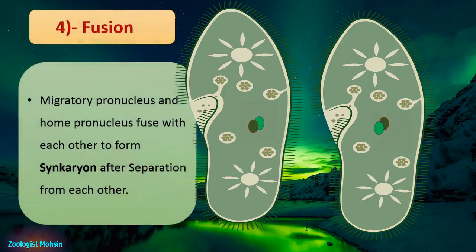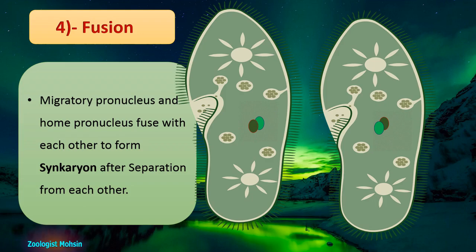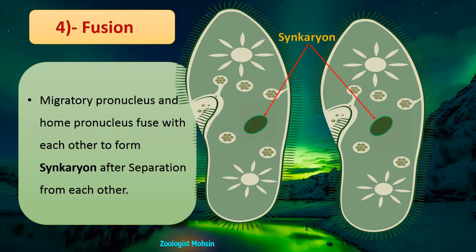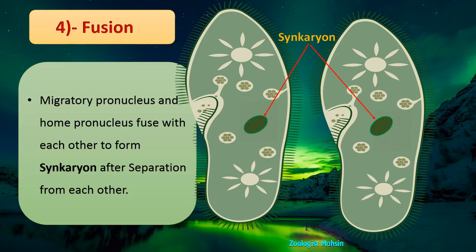After exchange, the next step is fusion. The migratory pronucleus from the other cell and the home pronucleus fuse with each other to form a syncarion. The fused new nucleus is called a syncarion, and it has a diploid chromosome number because two haploid pronuclei have fused.